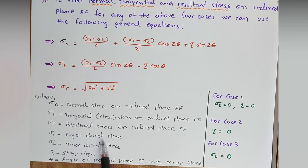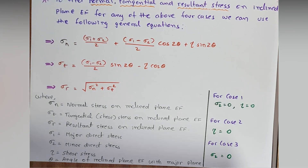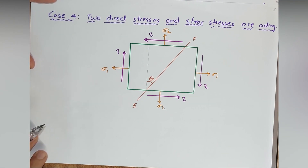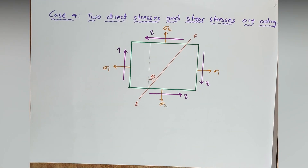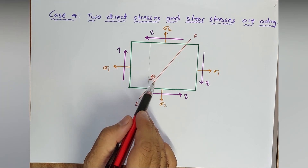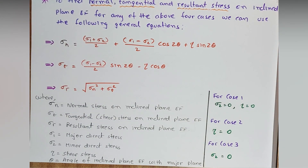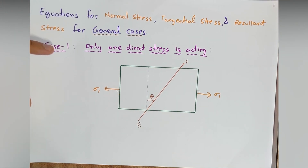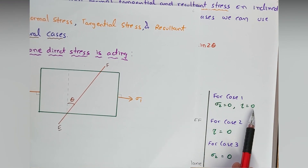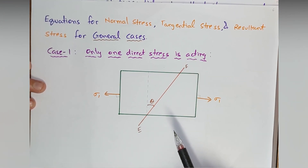The abbreviations are: sigma 1 = major direct stress, sigma 2 = minor direct stress, tau = shear stress, theta = angle of inclined plane EF with the major principal plane. For Case 1, sigma 2 = 0 and tau = 0, since there is only one direct stress and no shear stress.